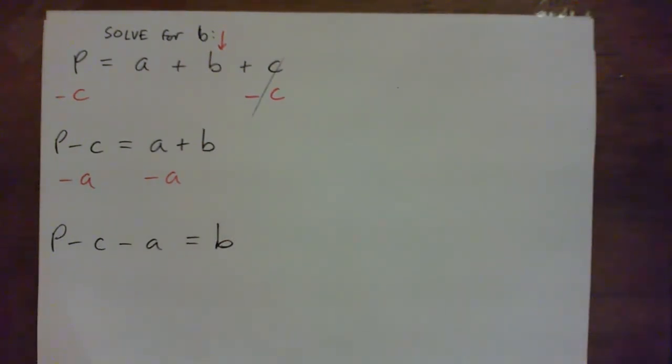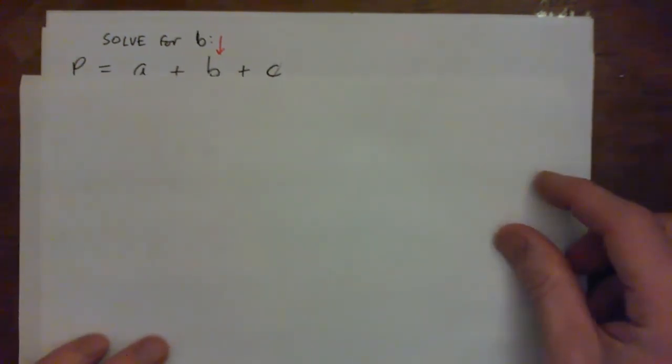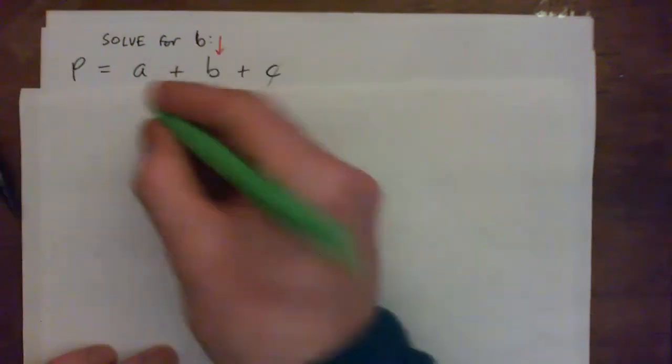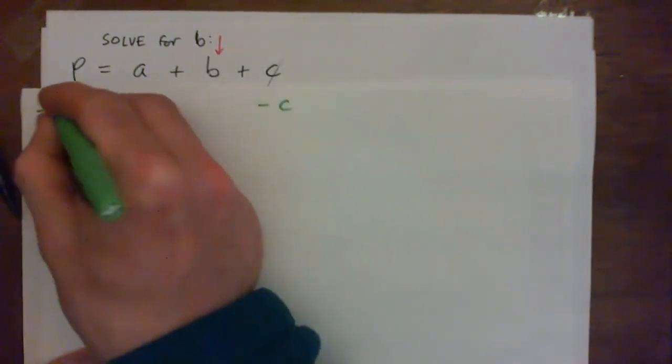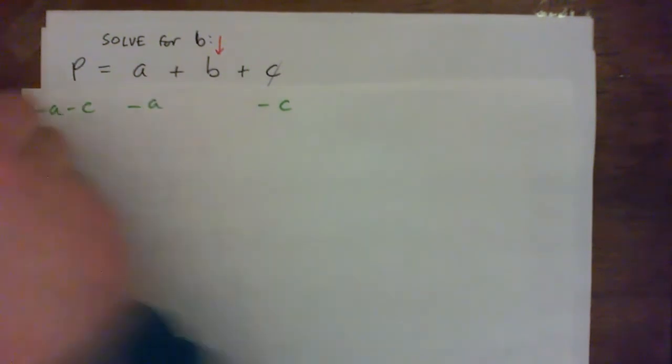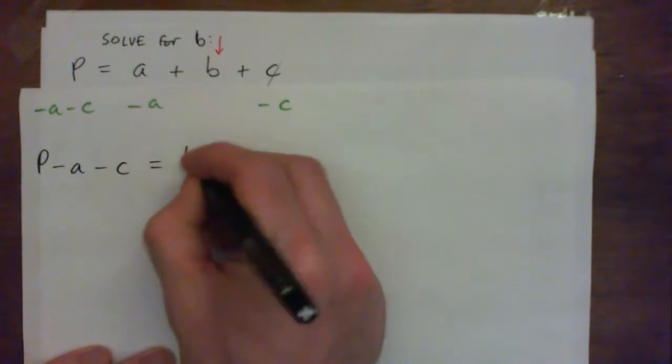So we could have subtracted both A and C at the same time at the beginning if we wanted to. We could have done this. Subtract A, subtract C from the right. Subtract A, subtract C from the left. And we would get P minus A minus C equals B. And that would also be correct.